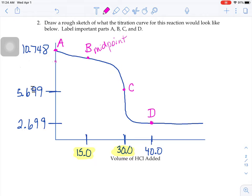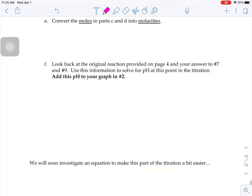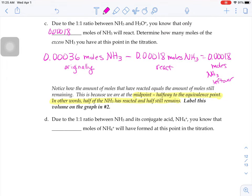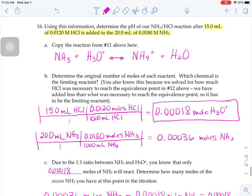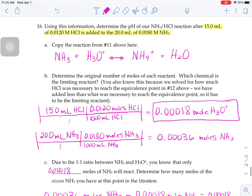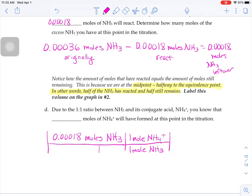What we're going to do next is figure out what the pH is at that midpoint. If you look up at the equation in part A, there's a one-to-one ratio between the NH3, the H3O+, and the NH4+. So you could do this one of two ways. You could say that you know that there's 0.00018 moles worth of NH3 reacting. And because there's a one-to-one relationship between the moles of NH3 and moles of NH4+, that you would have the same number of moles of NH4+.